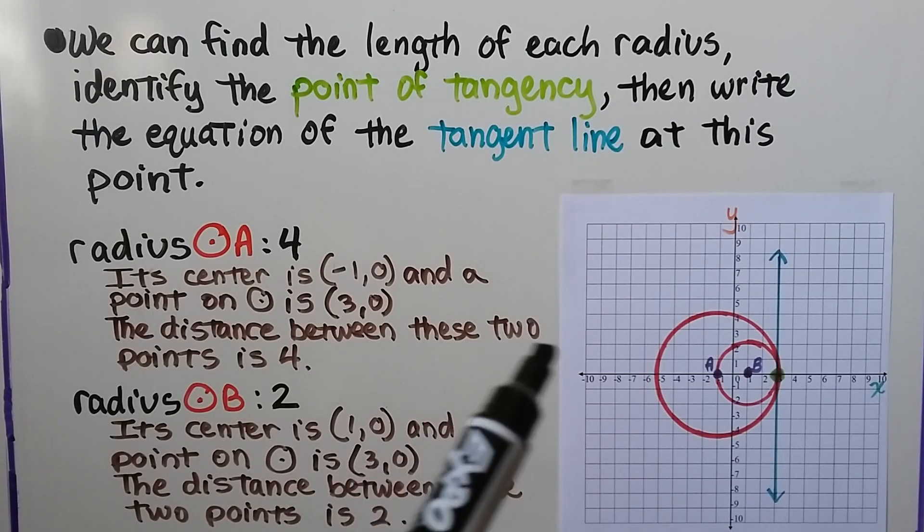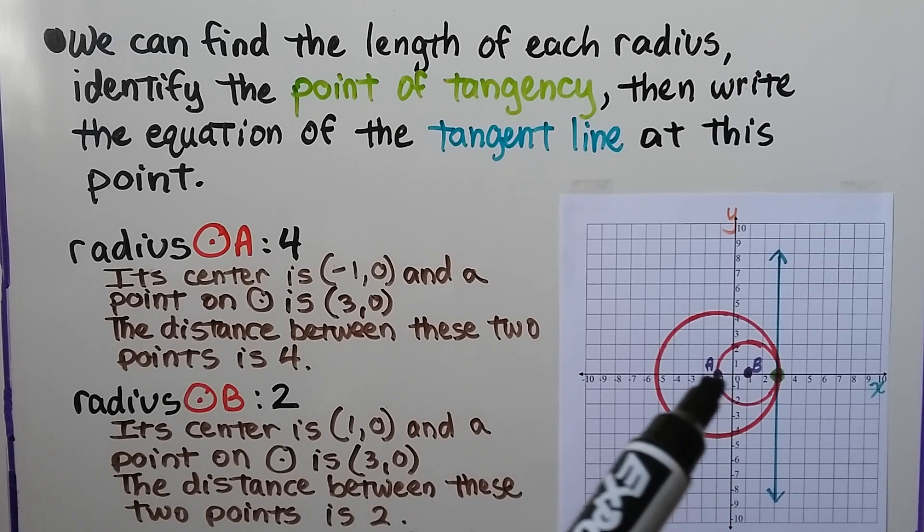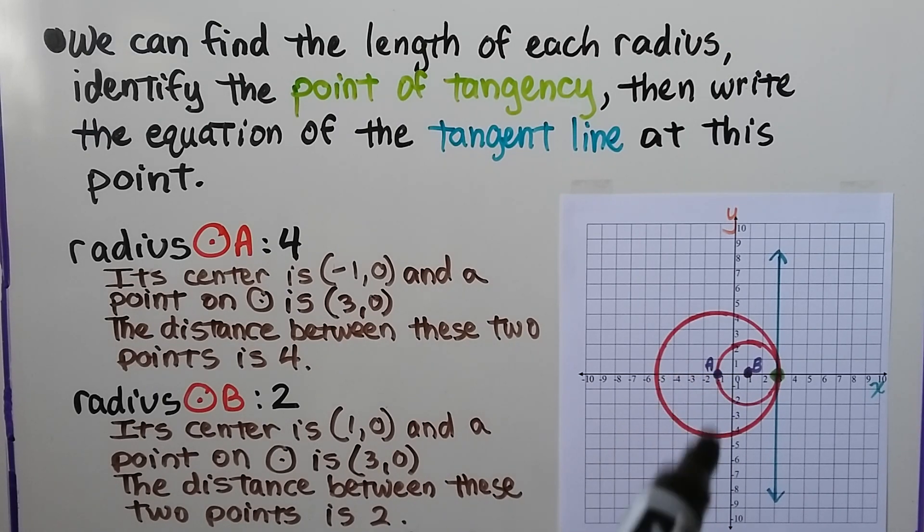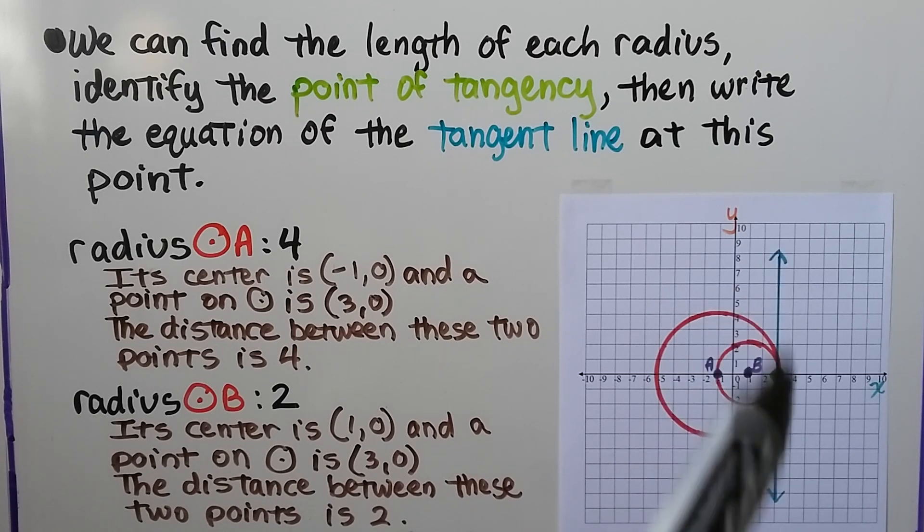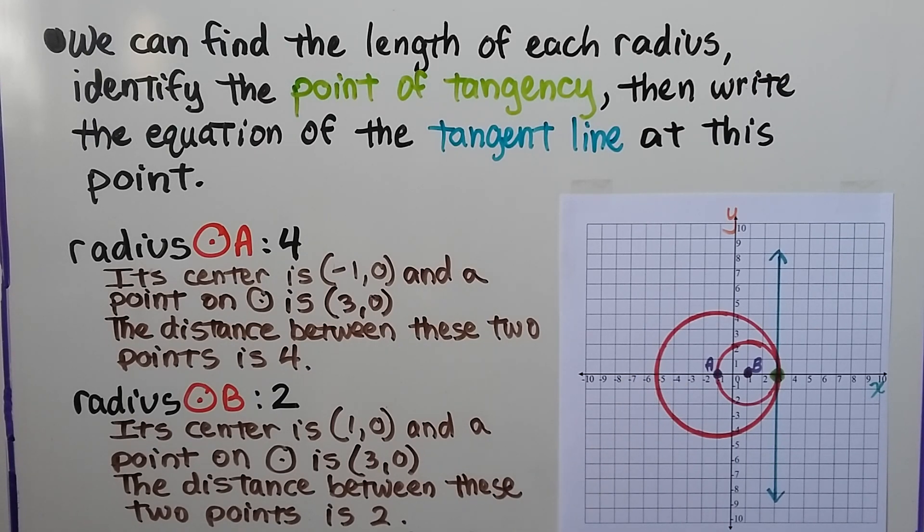Let me take a look at this diagram. We have circle B inside circle A. It's internally tangent. We can see we have this line here. The radius of circle A, the bigger one, is 4. Its center is at negative 1, 0. And a point on the circle is 3, 0. And the distance between these two points is 4. We can count the units 1, 2, 3, 4.